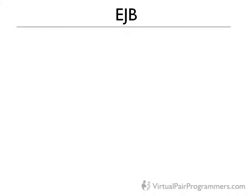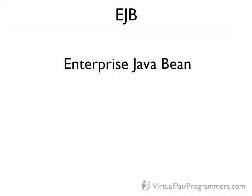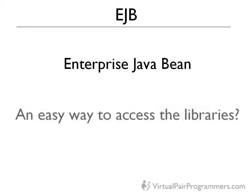The people who were creating Java EE were originally — back in about the early 2000s — really worried by this vast number of libraries that application servers contained. They were worried that it would be too hard to learn and understand. So they came up with an idea called EJB — Enterprise Java Bean — which isn't a very meaningful phrase. It was really just a label they gave this idea. If I were to convert this into English, I would say that an EJB was supposed to be an easy way to access those libraries.